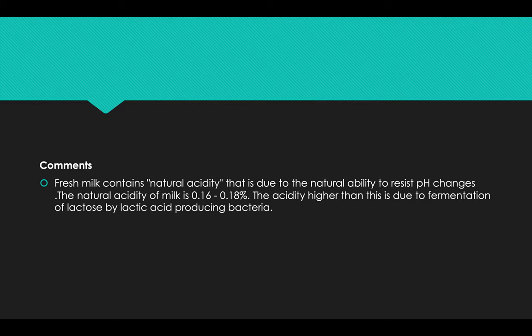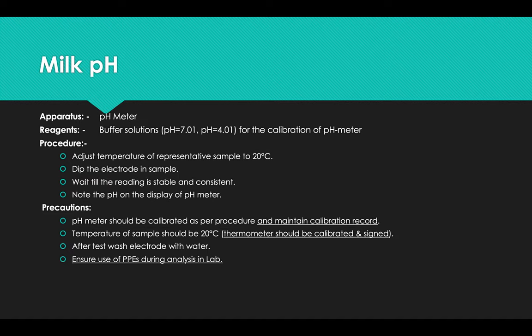Fresh milk contains natural acidity that is due to the natural ability to resist pH changes. The natural acidity of milk is about 0.16 to 0.18 percent. The acidity higher than this is due to fermentation of lactose by the lactic acid producing bacteria.